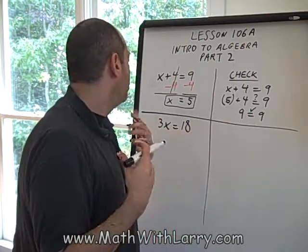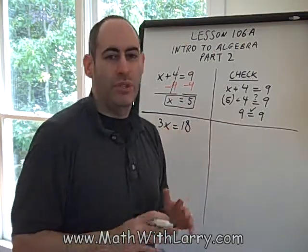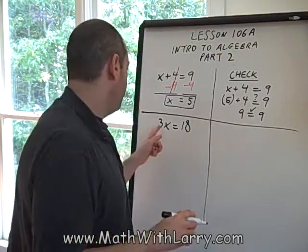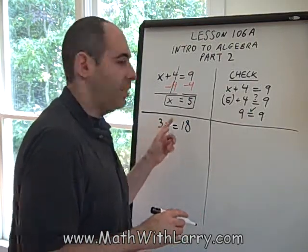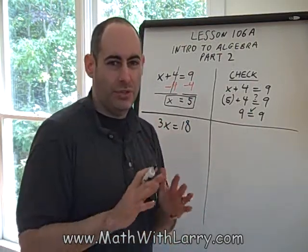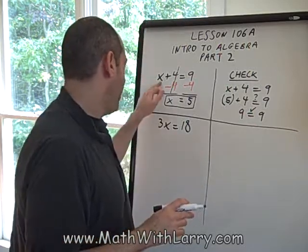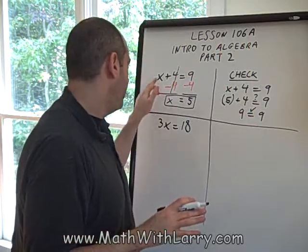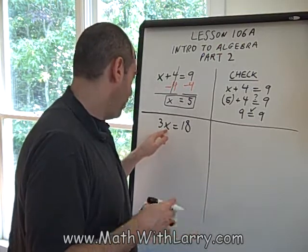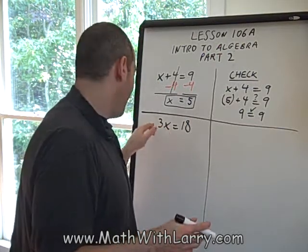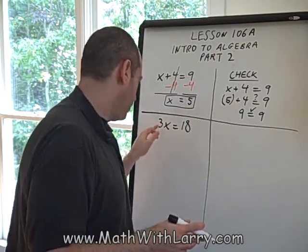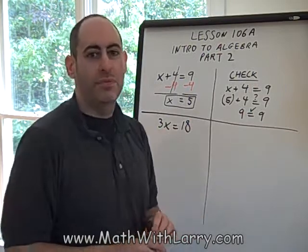we would also be implying multiplication because there is no symbol between the 3 and the a. So just make sure you're clear about that. When we had the x here, it had nothing to do with multiplication. It's just an unknown. This also is an unknown, but I know that we're dealing with multiplication because there's no symbol in between the 3 and the x.